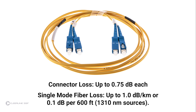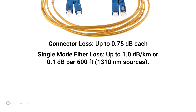Single-mode fiber loss is calculated at an average of 1.0 decibel per kilometer for 1310 nanometer sources, or roughly 0.1 decibels per 600 feet. For multi-mode fiber, the loss is about 3.0 decibels per kilometer for 850 nanometer sources, or 0.1 decibels per 100 feet.